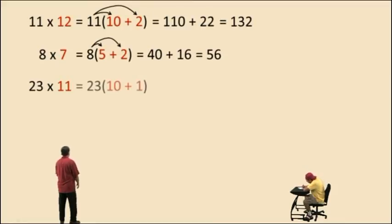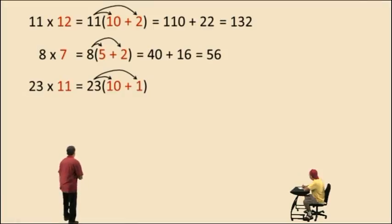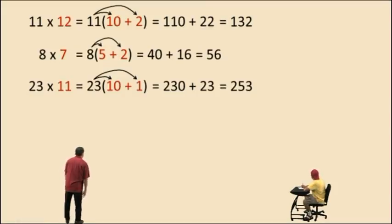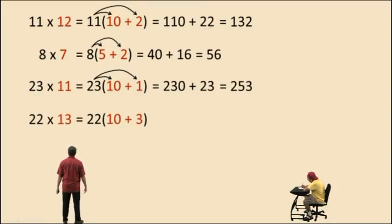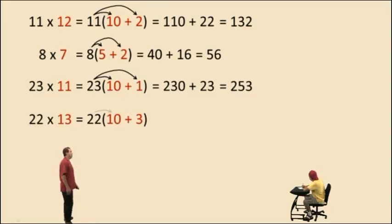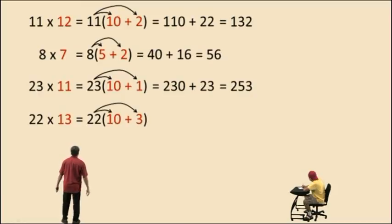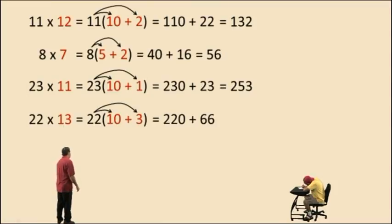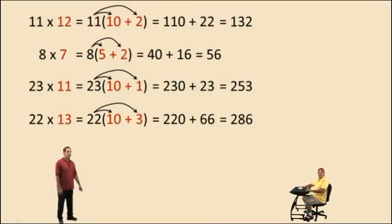Twenty-three times eleven — we rewrite the eleven as ten plus one, then distribute: twenty-three times ten plus twenty-three times one, and that's two hundred thirty plus twenty-three, which is two hundred fifty-three, Charlie. How about twenty-two times thirteen? Let's write thirteen in expanded form as ten plus three. Twenty-two times ten is two hundred twenty, plus twenty-two times three, which is sixty-six. Adding those numbers together, we get two hundred eighty-six.